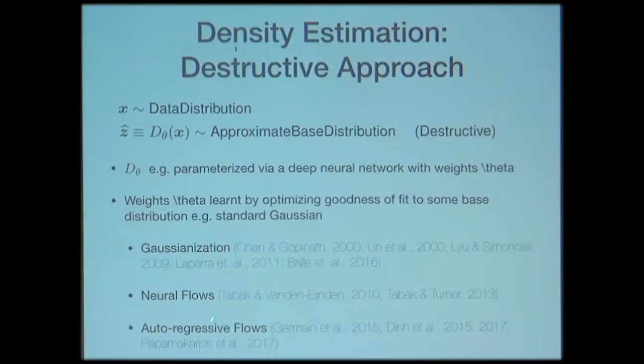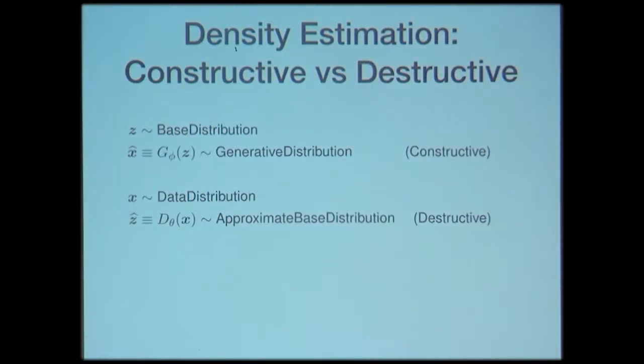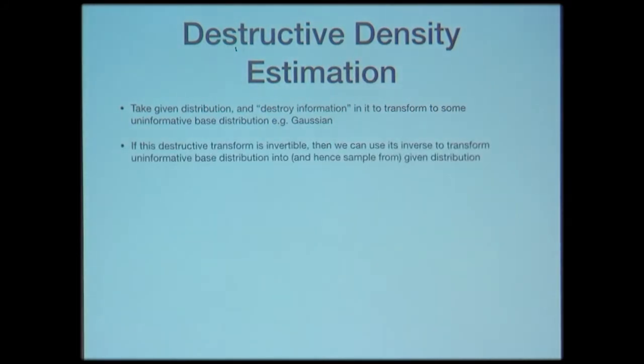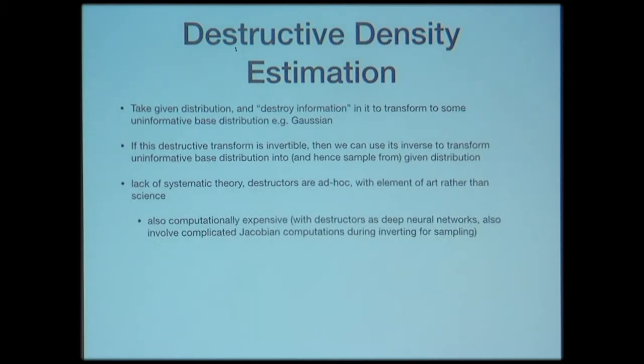This is why there are many papers that have carefully constructed these destructive transforms. To summarize: in a destructive approach to density estimation, we take our given data distribution and come up with a transformation that destroys the information in the data — transforming it to something highly uninformative. We do this in an invertible way so we can apply the inverse of the destructive transform to the uninformative base distribution to get an estimate of our data distribution.